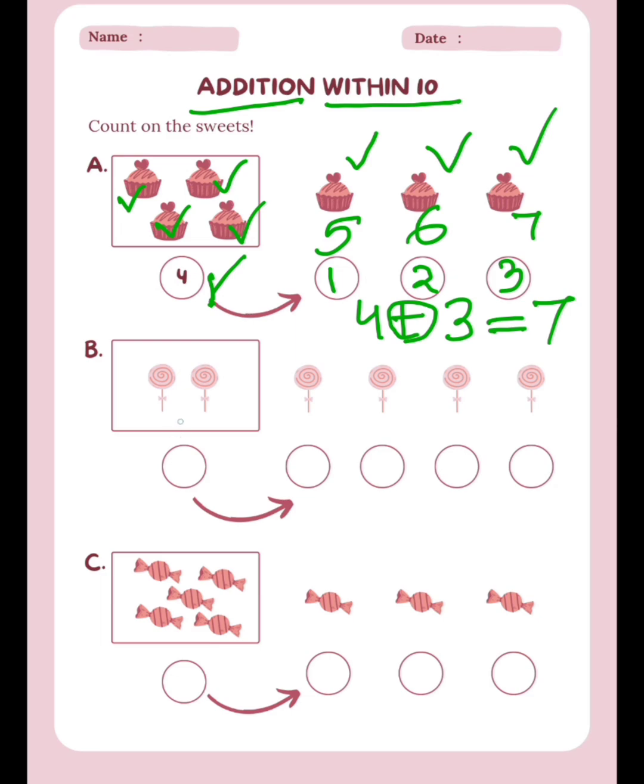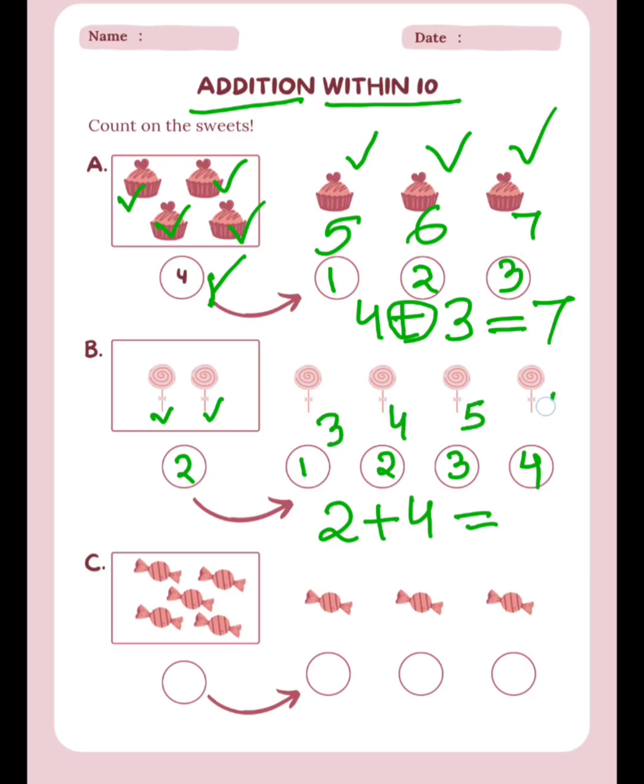Now you are going to do 1 and 2. We are going to write here 2. And how many more? 1, 2, 3, 4. So we are going to add like this: 2 plus 4. So after 2 you are going to count: 3, 4, 5, 6. So the answer is 6.